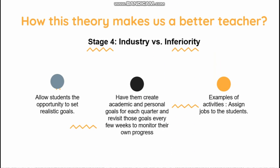Next is stage four, industry versus inferiority. It allows students the opportunity to set realistic goals. Have them create academic and personal goals for each quarter and revisit those goals every few weeks to monitor their own progress. When they have a goal they want to achieve, they need to know what to do and work hard to make it a reality. An example activity is to assign jobs to students, so they become more responsible and more likely to be industrious.